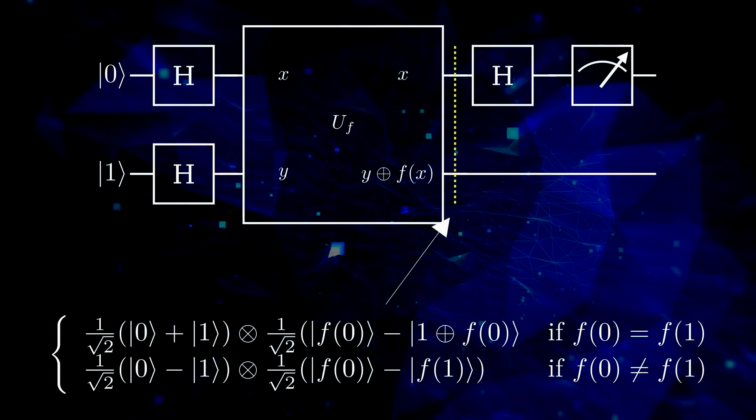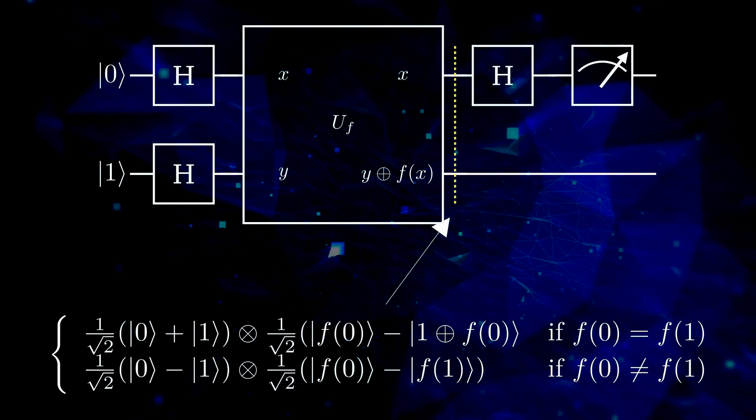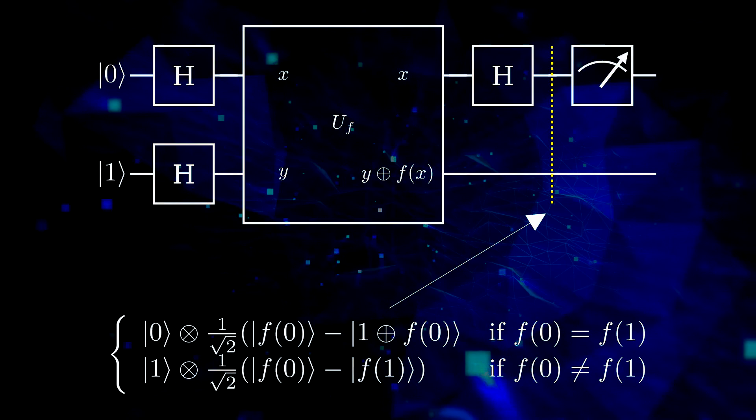After applying the Hadamard gates, we get a new state, the tensor product of two states that are superpositions of the basic states.